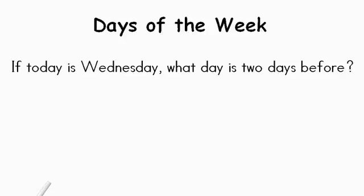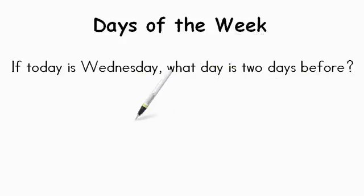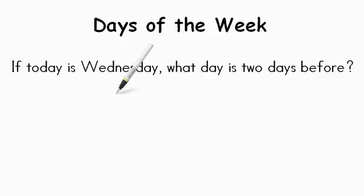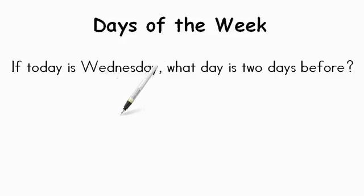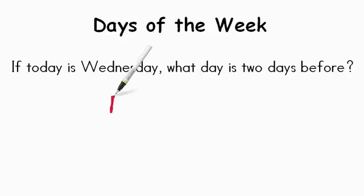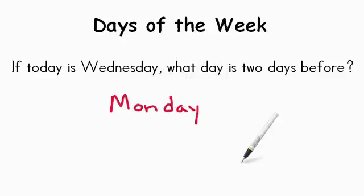Now here's a little trickier one. If today is Wednesday, what day is two days before? So we're looking at days that come before — the ones that have already happened. If today is Wednesday, let's go back two days. Going back one day would be Tuesday, and another day would be Monday. So Monday is two days before Wednesday.